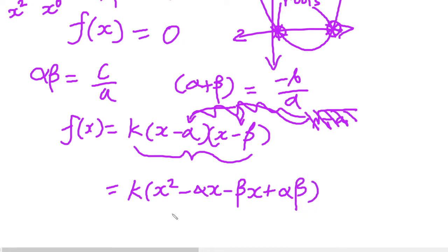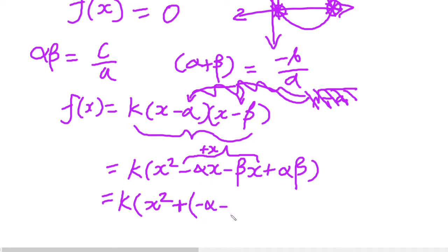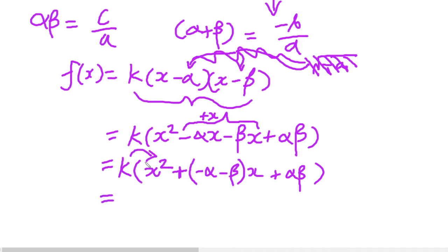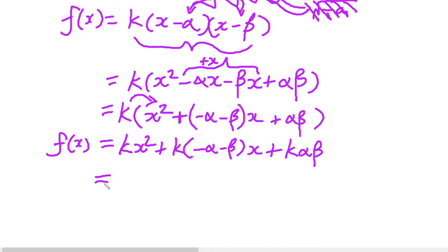Factoring out x from the middle terms, we get k(x² + (−α − β)x + αβ). And finally, multiplying k through the bracket, we get f(x) = kx² + k(−α − β)x + kαβ.